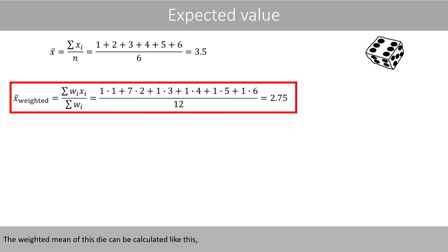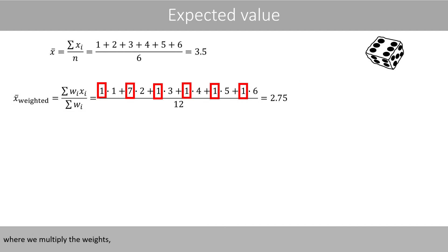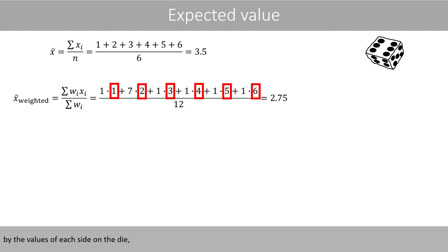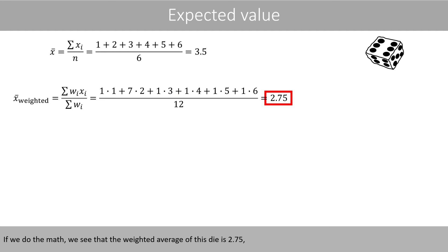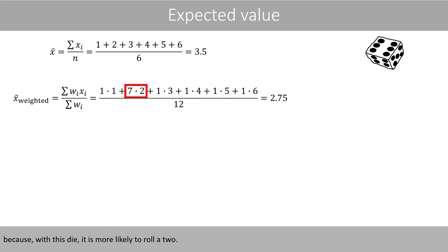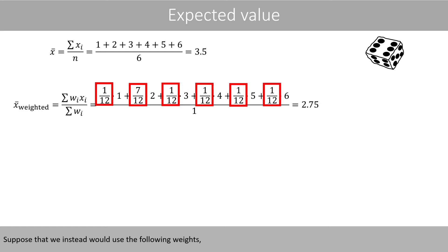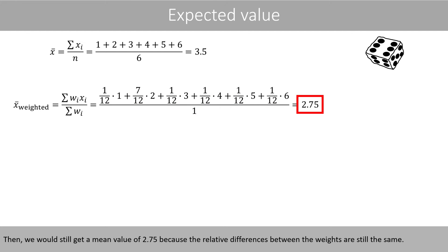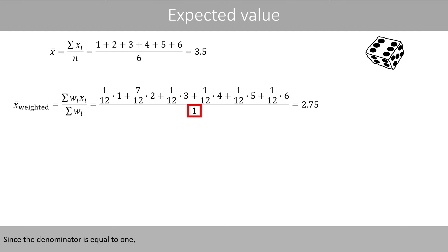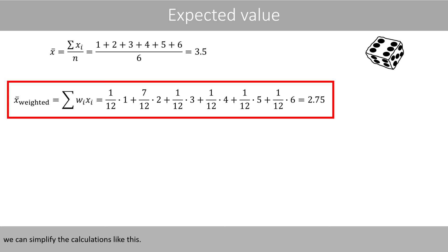The weighted mean of this die can be calculated by multiplying the weights by the values of each side on the die and dividing by the sum of the weights. If we do the math, we see that the weighted average of this die is 2.75, which is lower than the fair die with equal weights, because with this die it is more likely to roll a 2. Suppose that we instead use the following weights which now sum up to 1. Then we would still get a mean value of 2.75 because the relative differences between the weights are the same. Since the denominator is equal to 1, we can simplify the calculations.